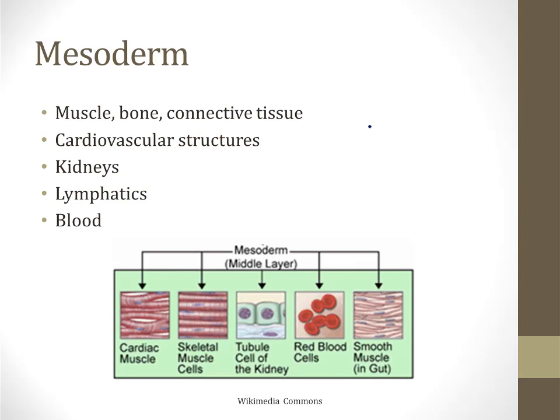So if the ectoderm is everything on the outside like skin, hair, and nails, and the endoderm is the GI tract on the inside, then the mesoderm is everything in the middle. Mesoderm develops into muscles, bone, connective tissue, cardiovascular structures, the kidneys, the lymphatics, and the blood. Most things that aren't skin or GI tract derivatives come from the mesoderm.